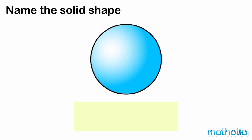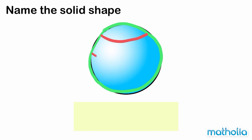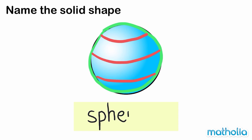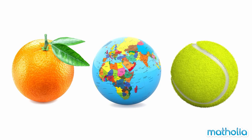This shape has one curved face. We call this solid shape a sphere. These objects have shapes similar to a sphere.